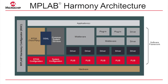Currently we're looking at the Harmony block diagram. Harmony is a layered modular architecture. At the lowest layer we have our peripheral libraries, which are simple accessor functions that maintain no state of their own. They just provide a function interface that stays consistent from one part to another, no matter which PIC32 part you choose.